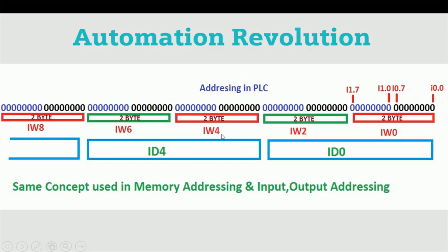If we are assigning analog output, same thing: QW0, then QW2, QW4 like this. If we are assigning 32-bit resolution in analog input or output, we will take double word. Double word would be four-byte combination and two-word combination. So IW0 and IW2 will be ID0, and then next we will skip four values: ID4, then ID8. This memory addressing concept will be applicable for input, output, and memory area also.